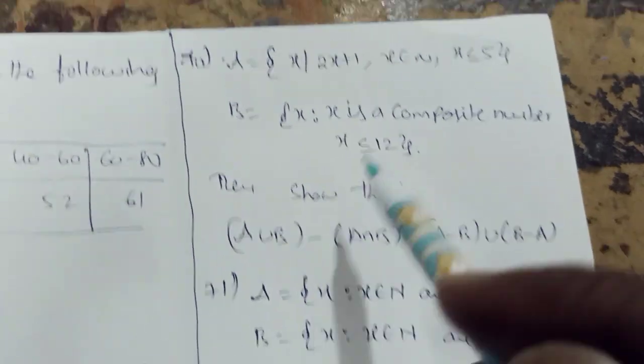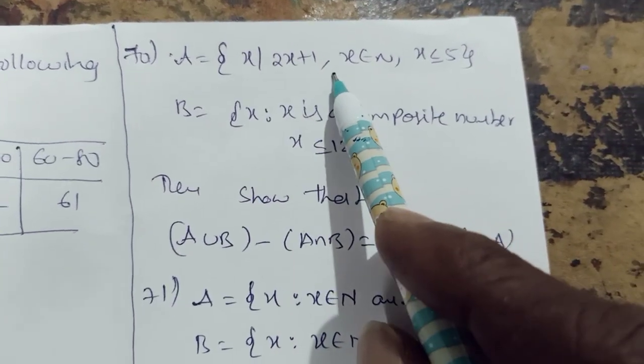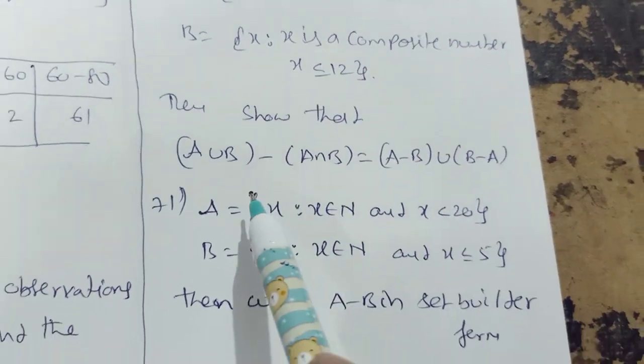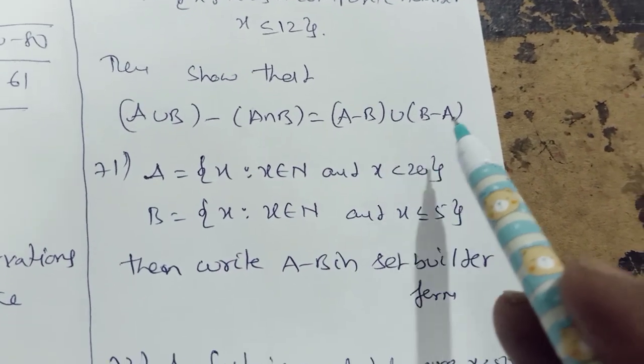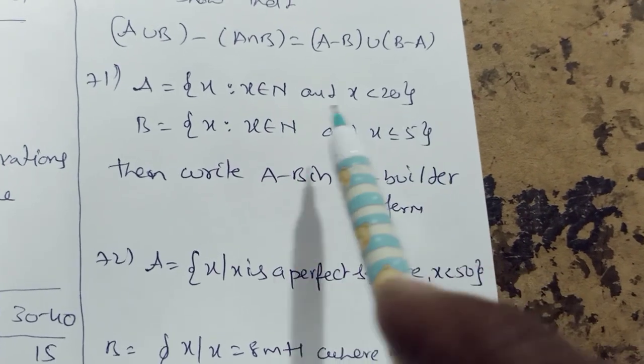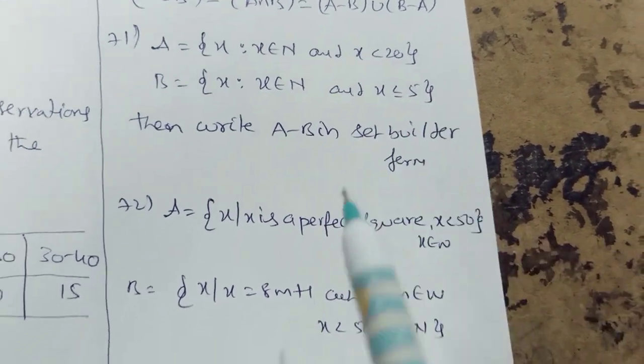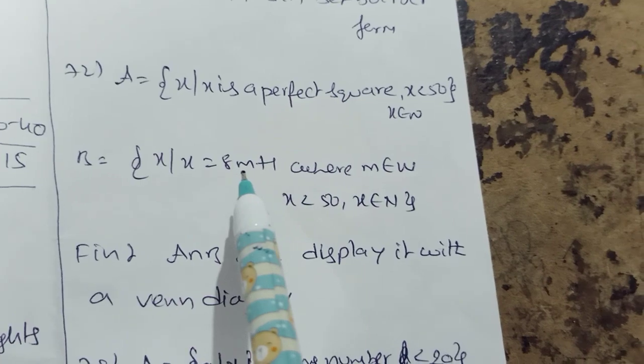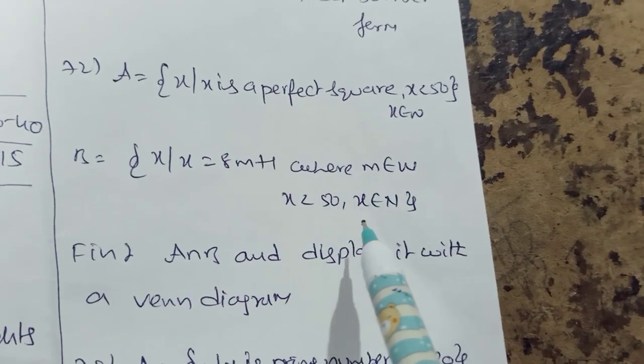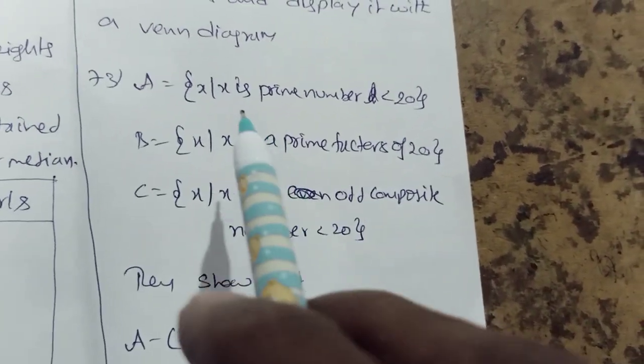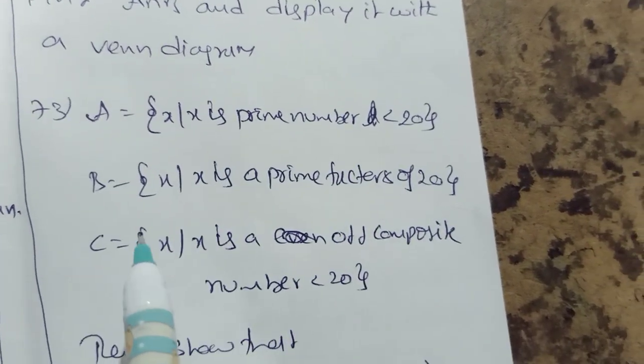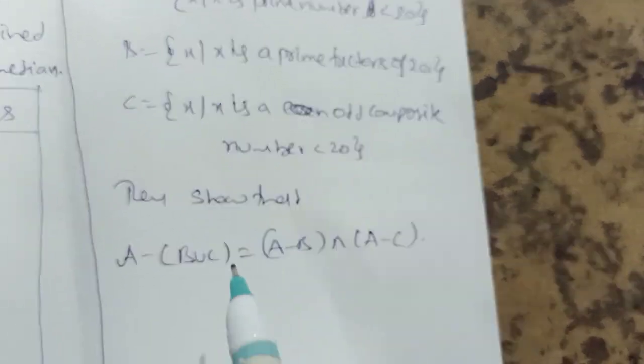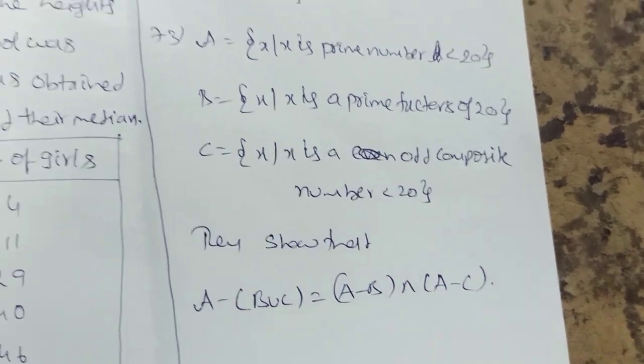Sets. Set A is equal to x: x is 2x plus 1, x belongs to N, x is less than or equal to 5. Set B is x: 2x is a composite number, x is less than or equal to 12. Show that A union B minus A intersection B equal to A minus B union B minus A. Set A is equal to x such that x belongs to N, x less than 20. Write A minus B in the set builder form. A is equal to x such that x is a perfect square less than 50, x is equal to 8m plus 1 where m belongs to W, x less than 50, x belongs to N. Find A intersection B and display it with a Venn diagram. A is equal to x such that x is a prime number less than 20, x such that x is a prime factor of 20, x such that x is an odd composite number less than 20. Show that A minus B union C equal to A minus B intersection A minus C.